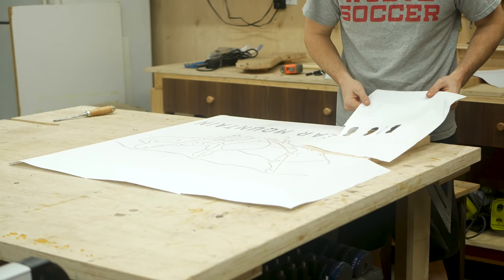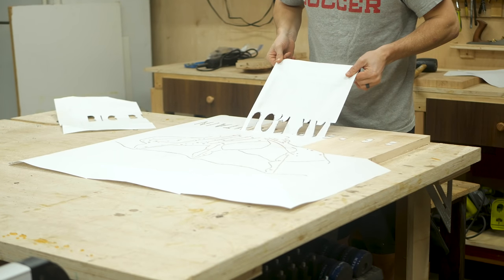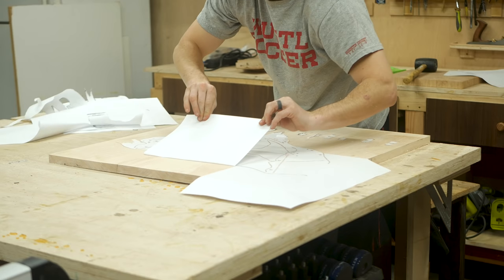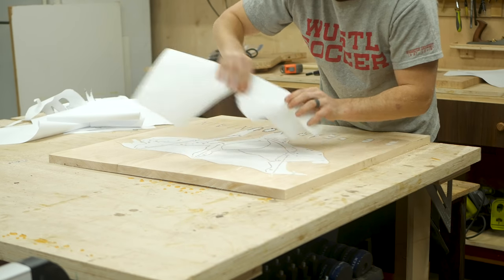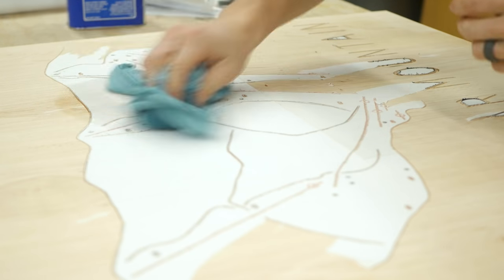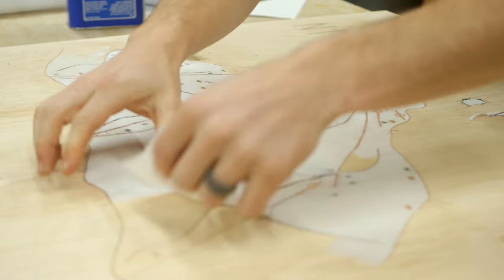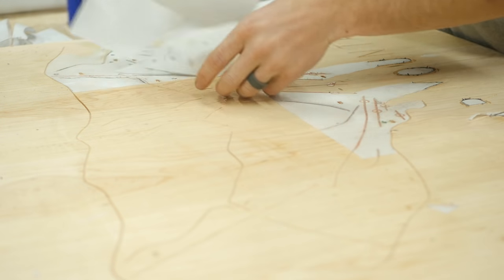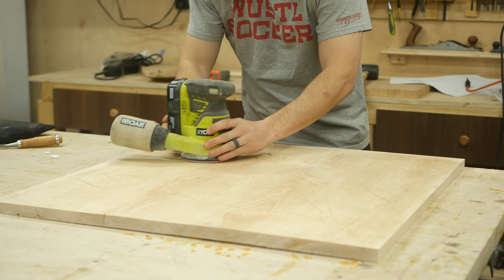The papers peeled off surprisingly easy once I was done but the backup plan was to use some acetone and wipe down the papers which in doing so immediately negated the effect of the glue and the papers peeled right off. I then could once again use my orbital sander to sand off away the remainder of the dried glue.